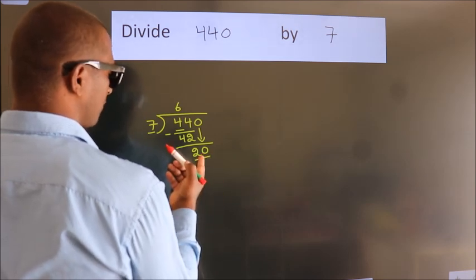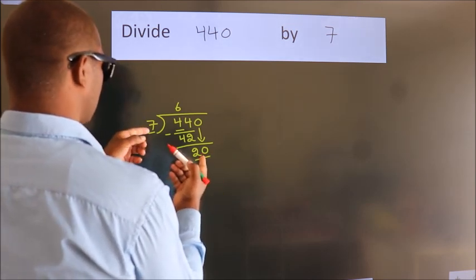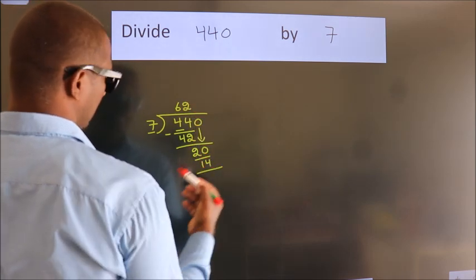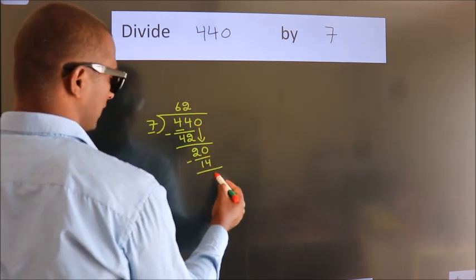A number close to 20 in the 7 table is 7 times 2, 14. Now we subtract. We get 6.